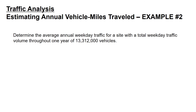In example two, we're asked to determine the average annual weekday traffic for a site with a total weekday traffic volume throughout one year of 13,312,000 vehicles. The equation: AAWT equals 13,312,000 vehicles divided by 260. That 260 represents the number of weekdays in a year — 52 weeks times five days per week.